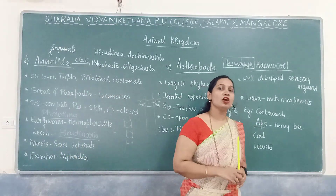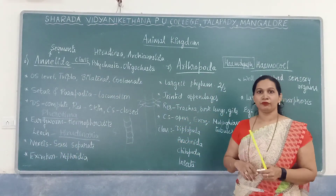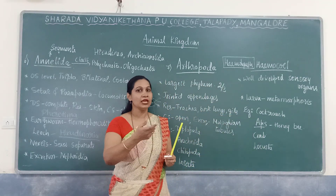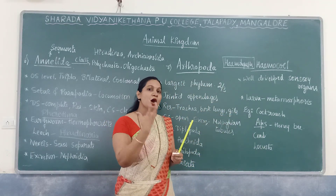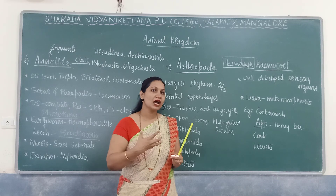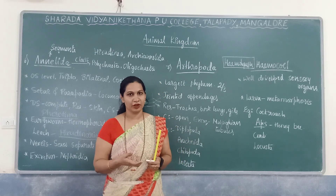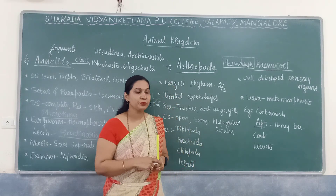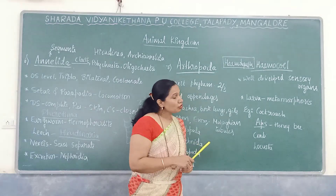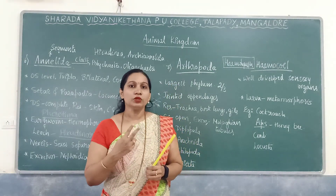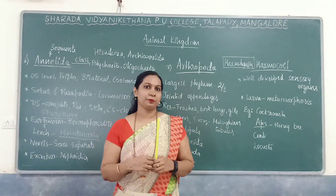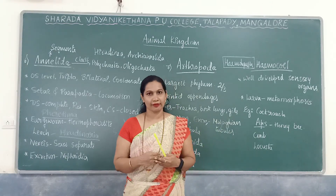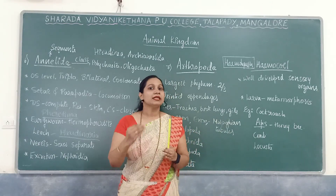Their sensory organs are very well developed. For example, the cockroach has an antenna-like structure as well as mouth parts, all meant for sensory function. Regarding development, there are mainly two types: direct development and indirect development.